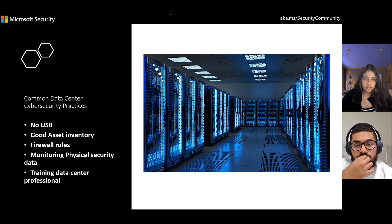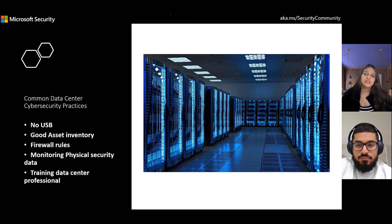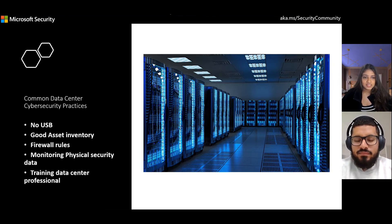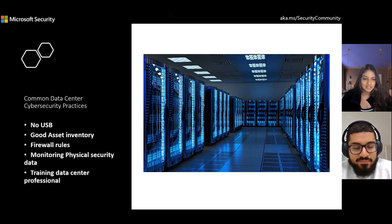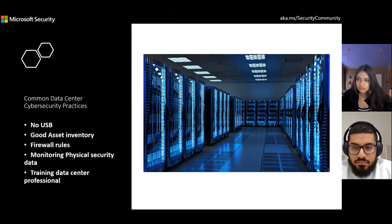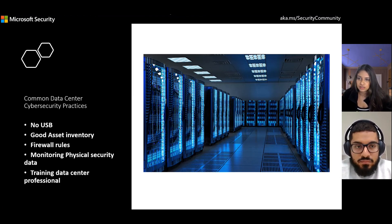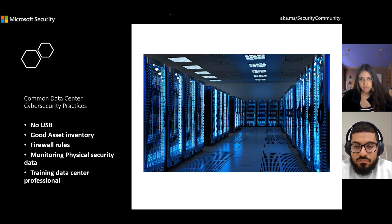The third example is firewall rules — you want a list of rules that governs how data flows between devices and to the internet, so any unexpected change is easy to detect. Next is monitoring physical security, tracking who is entering and exiting your data center to keep track of people that are not supposed to be there. Finally, you want to train your data center professionals so that if they notice something strange — a device or a person that shouldn't be there — they're able to detect it and notify security. These are just some general practices you can take to keep your data center healthy.